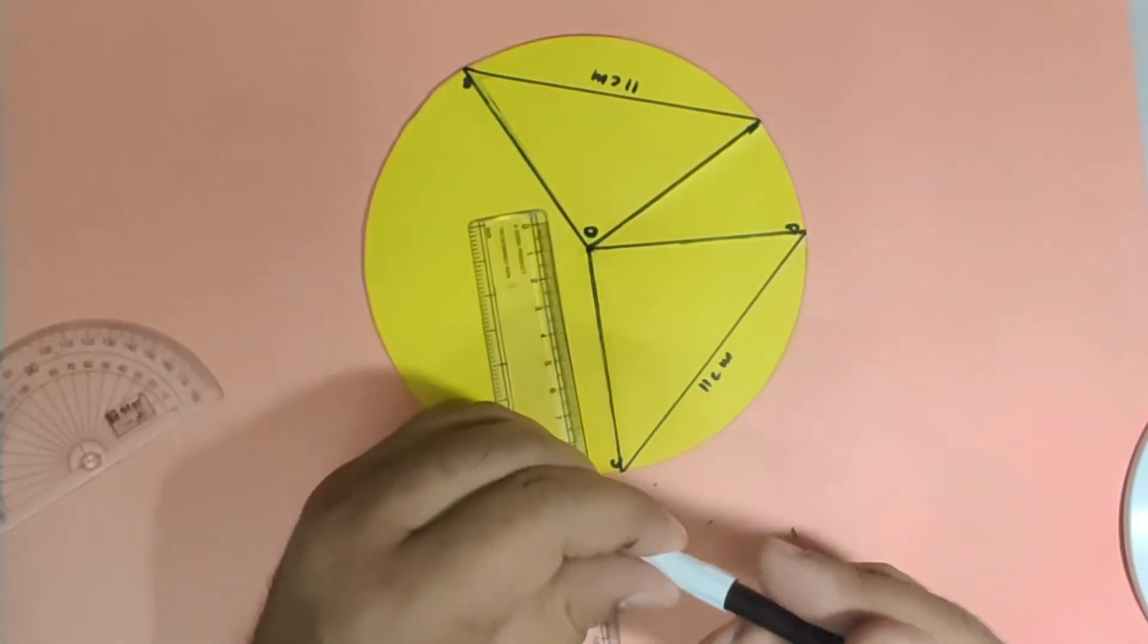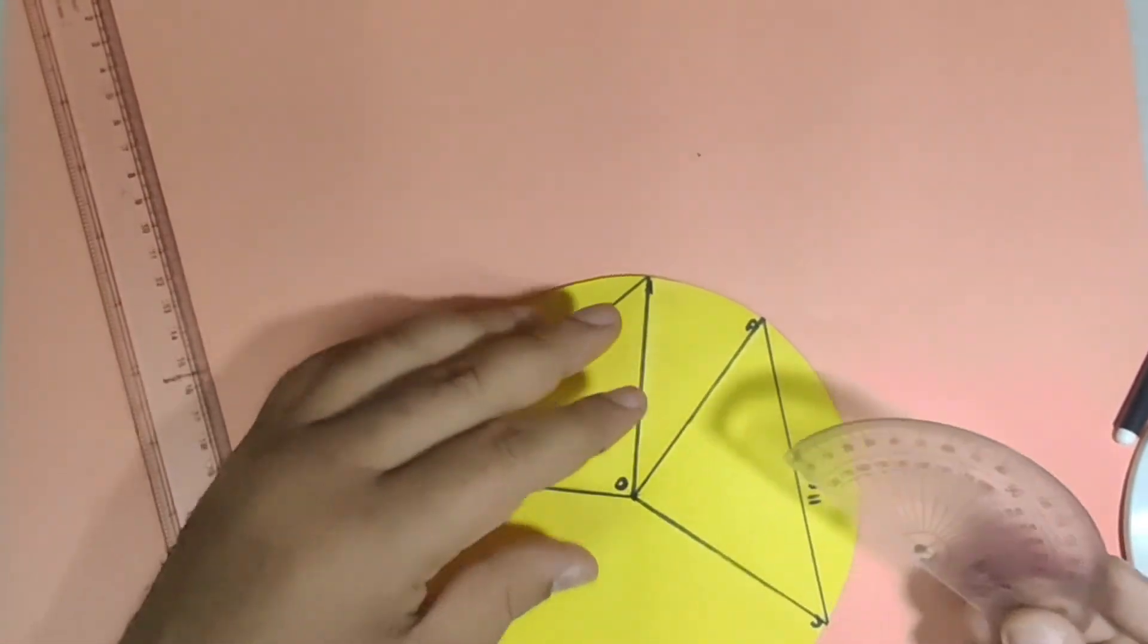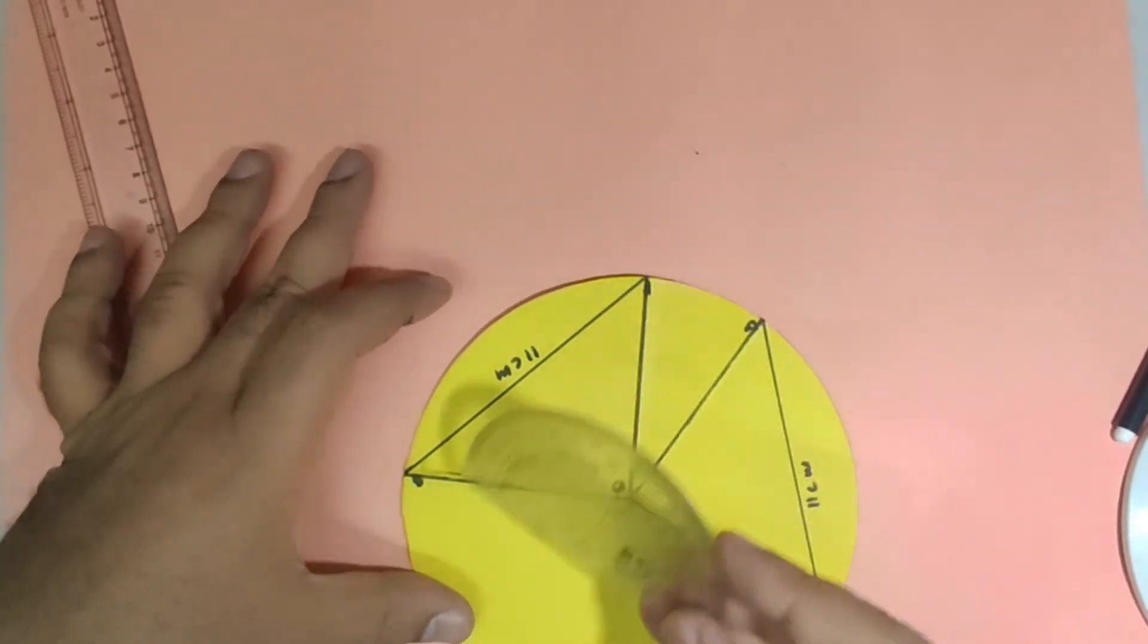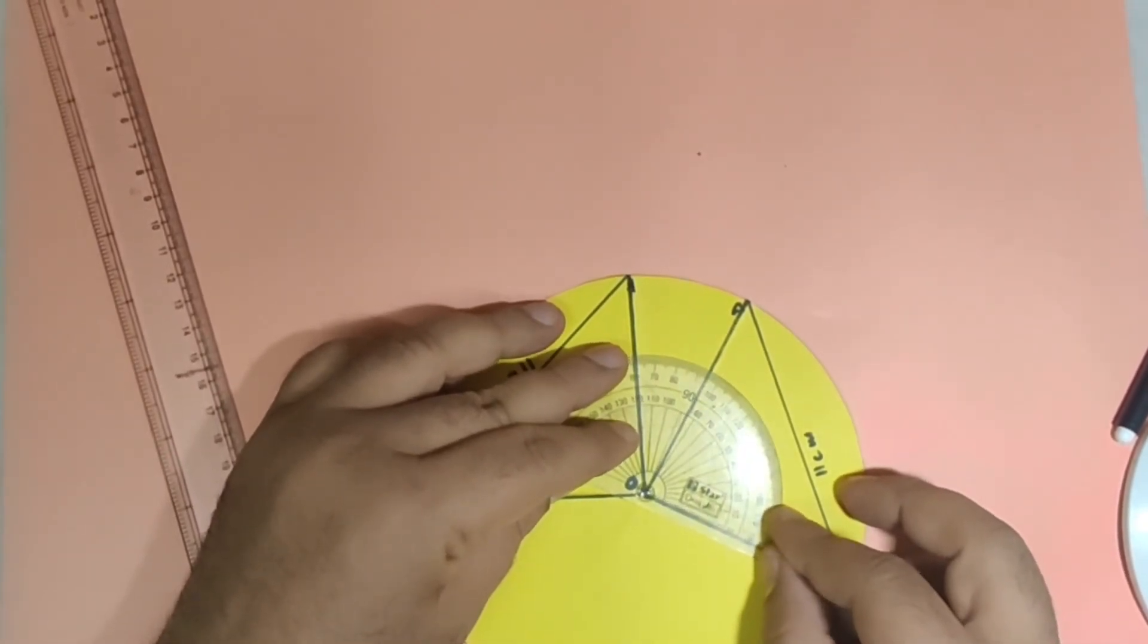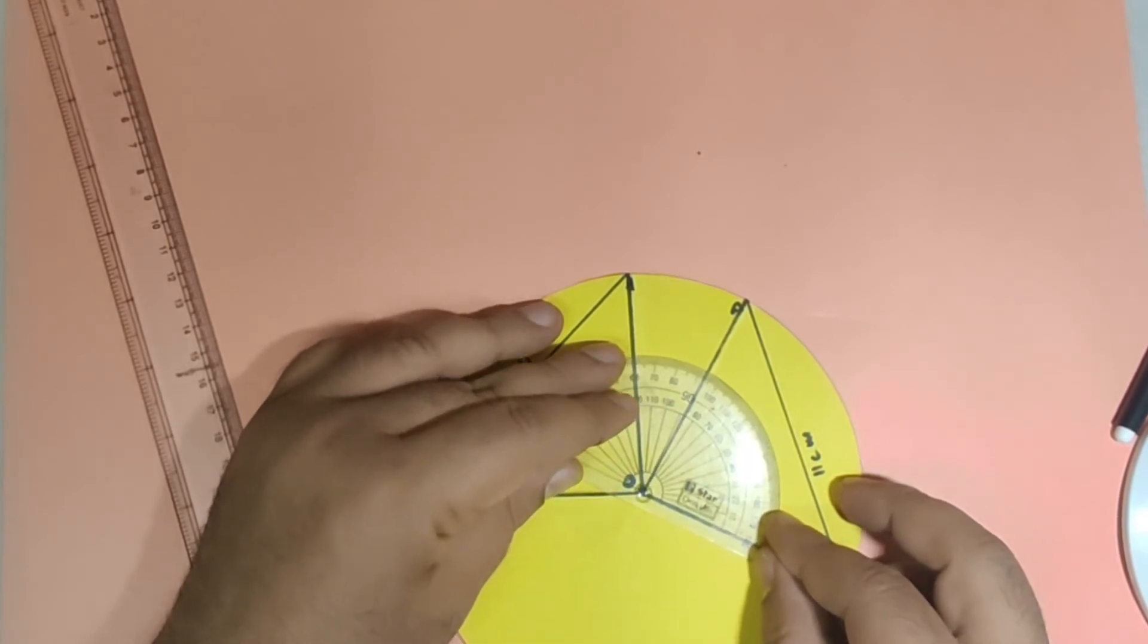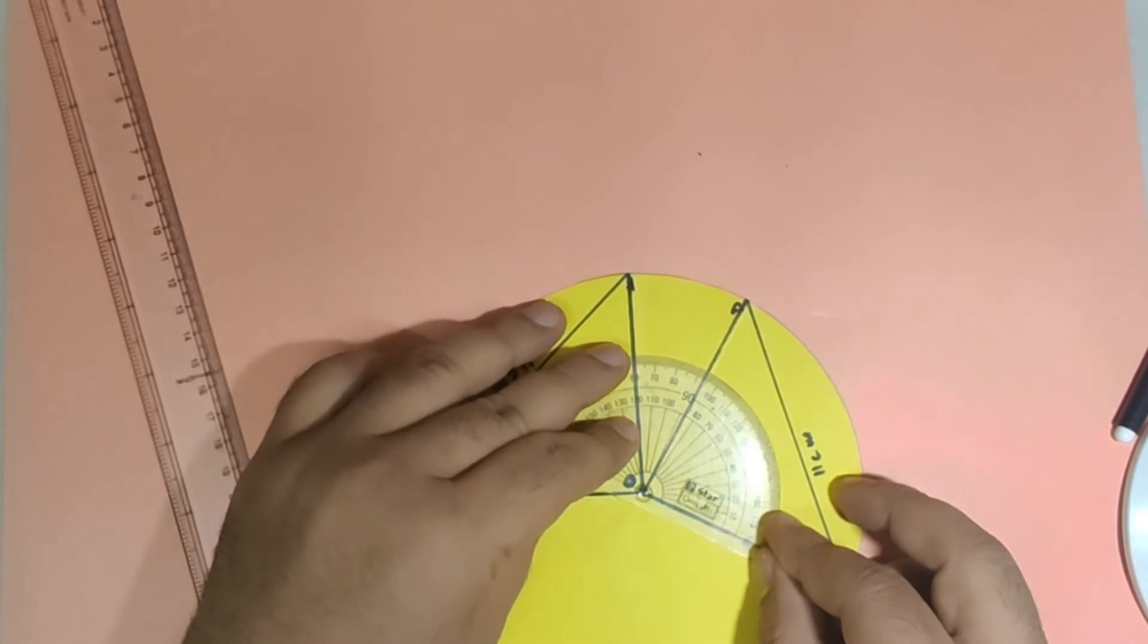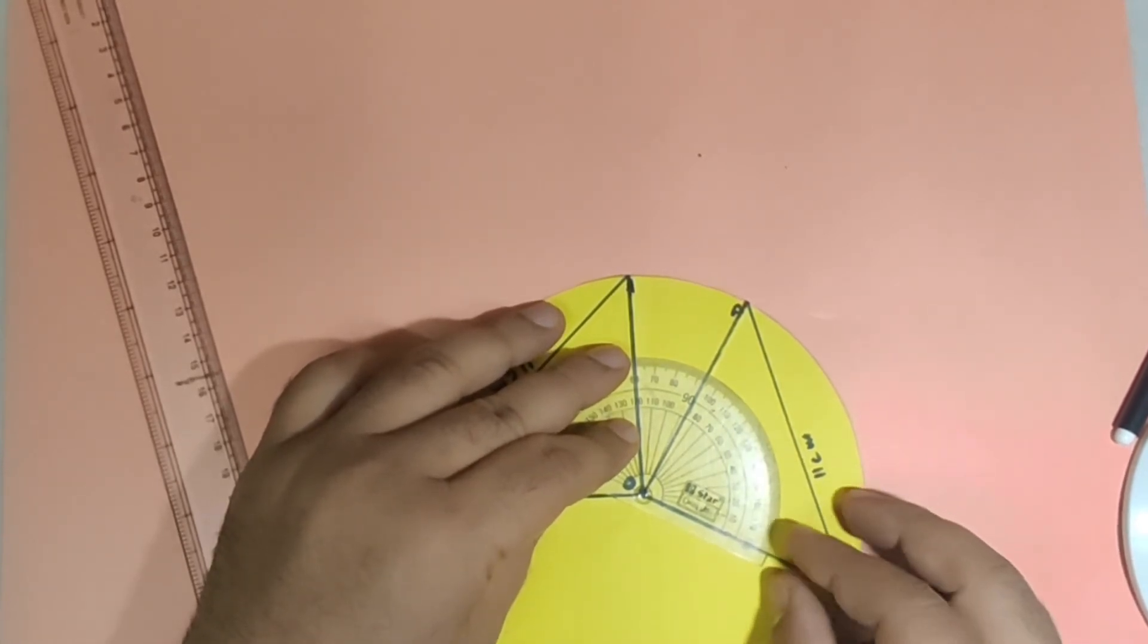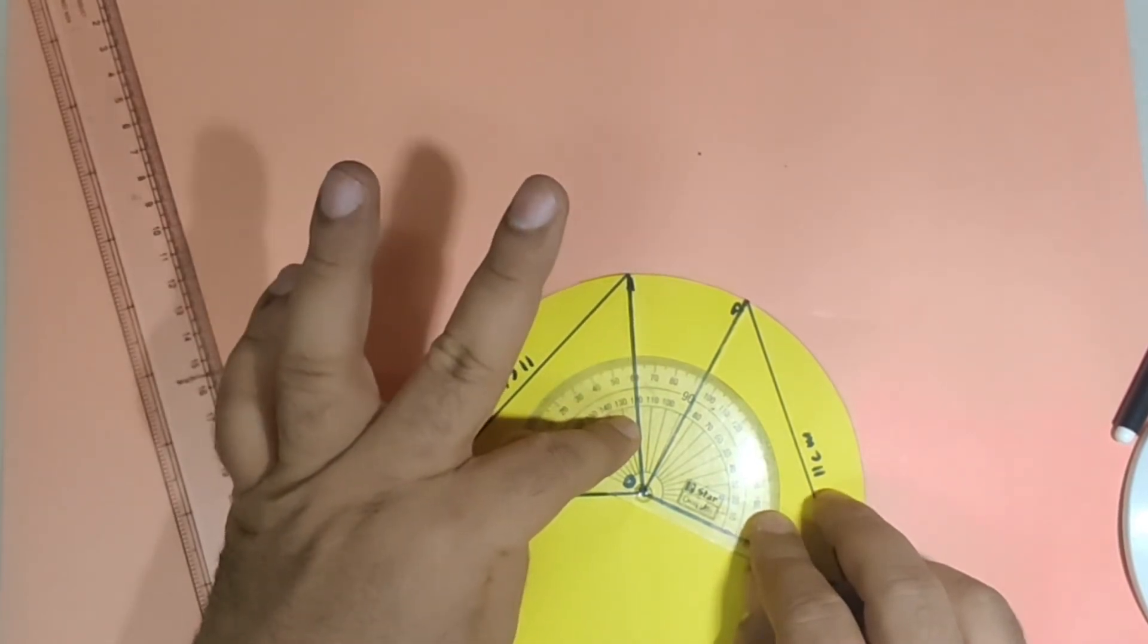Now after this let us measure the two angles which are subtended by the chord AB and CD of the circle. So you can see that this angle is...